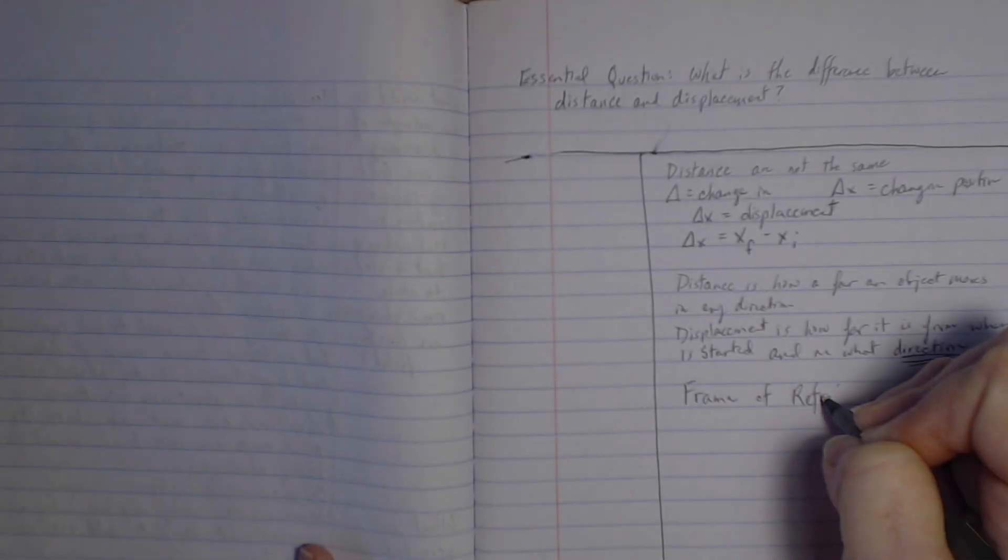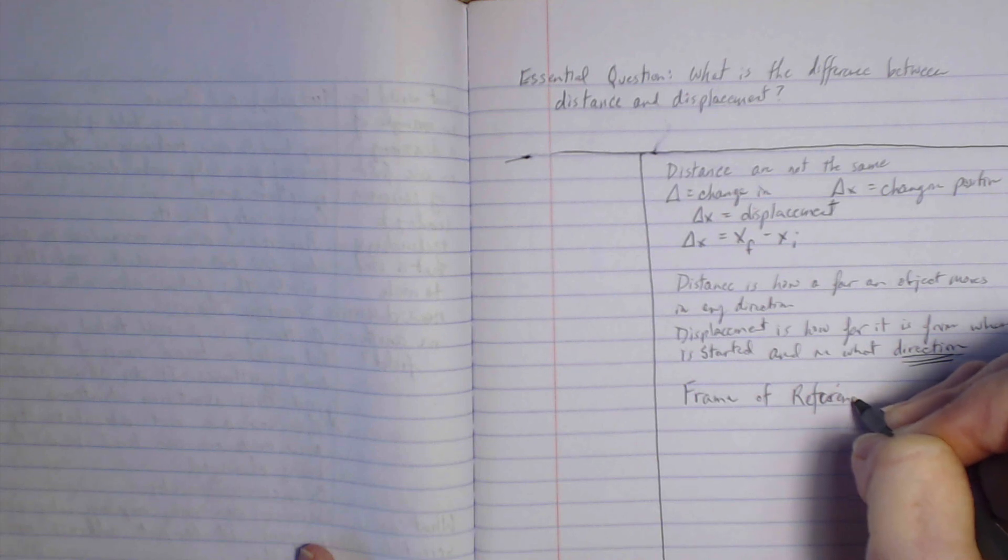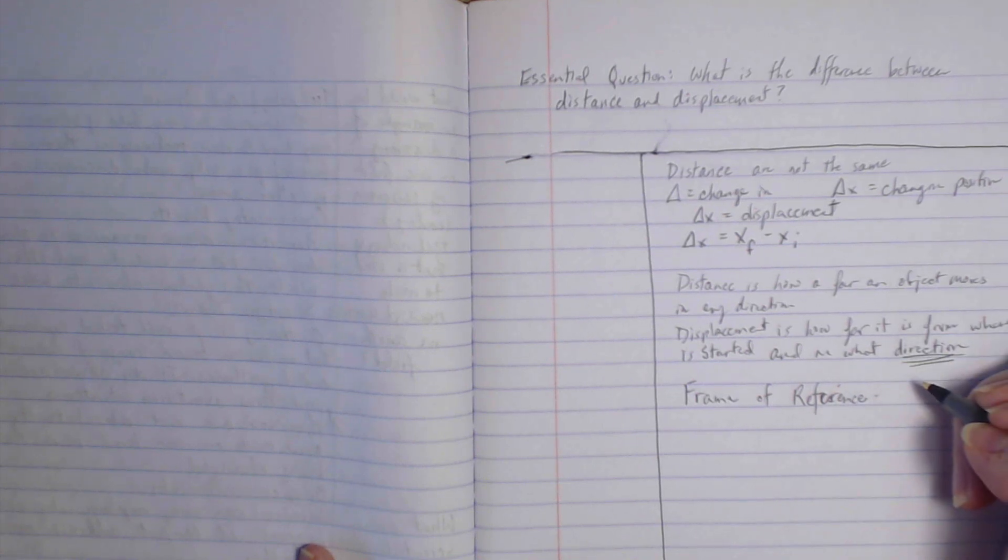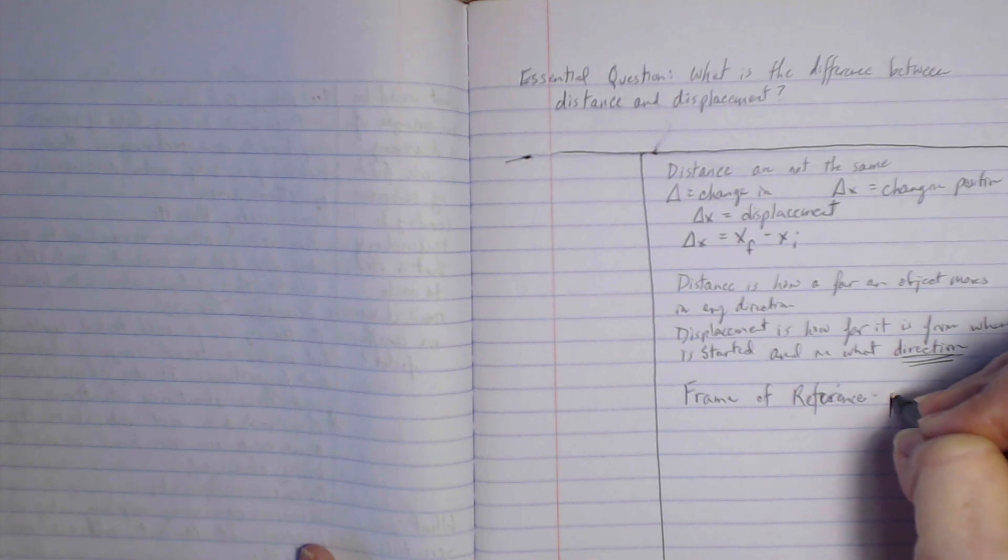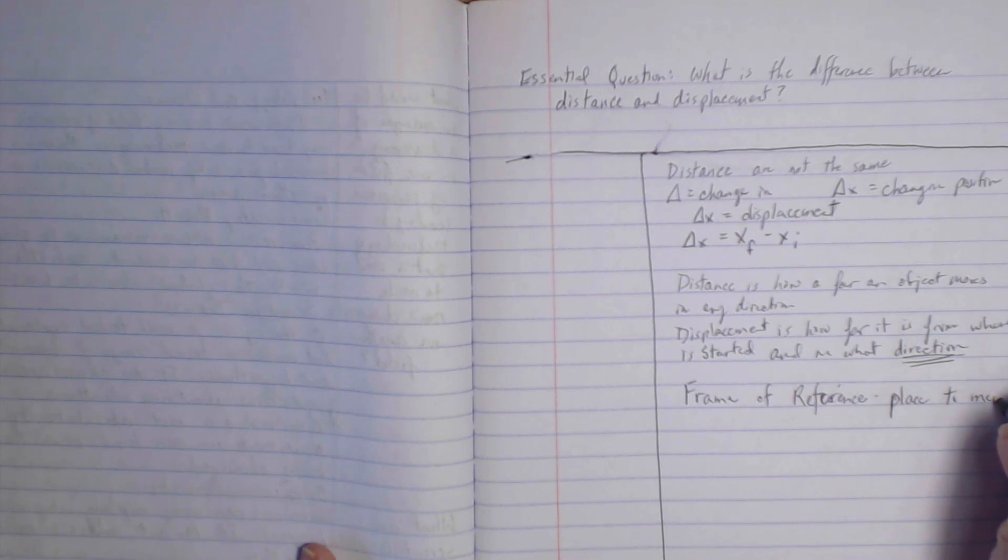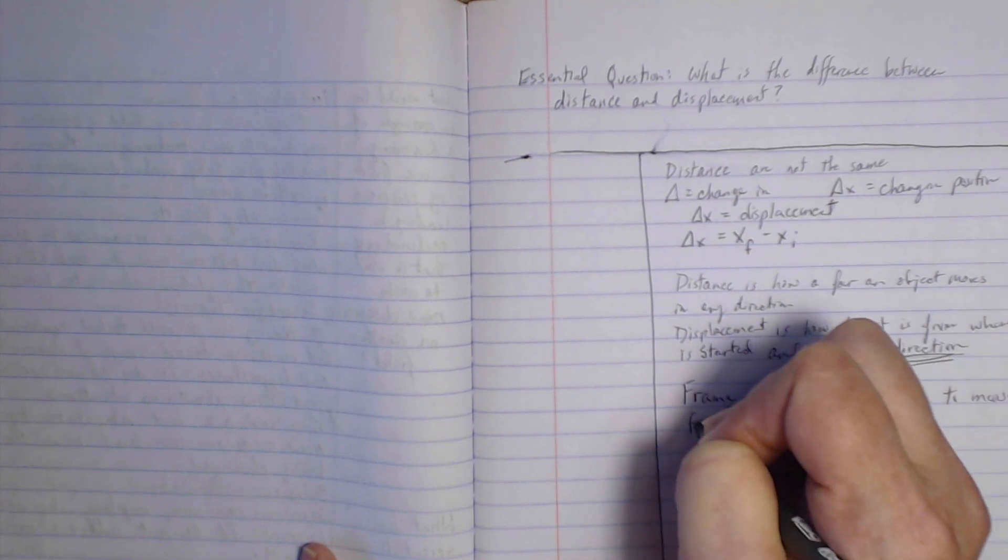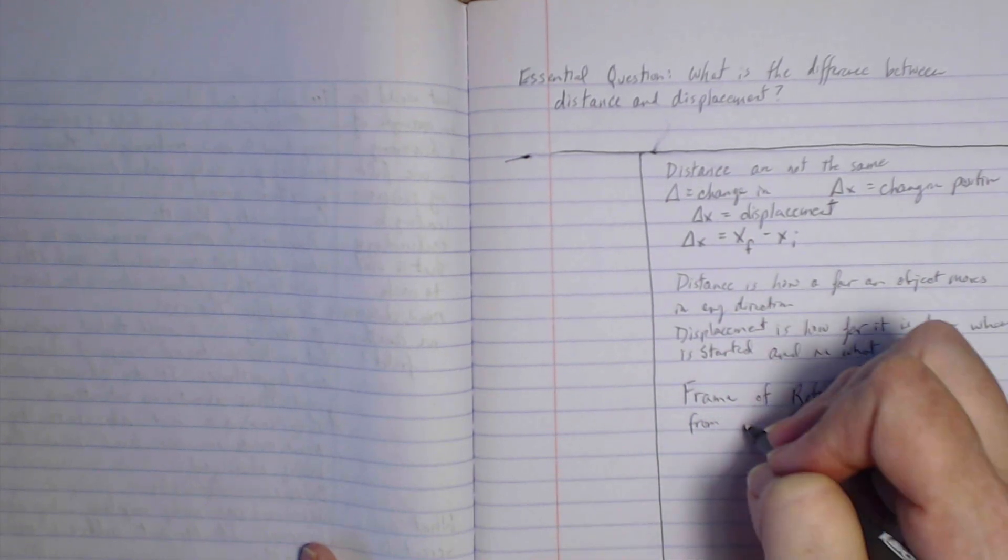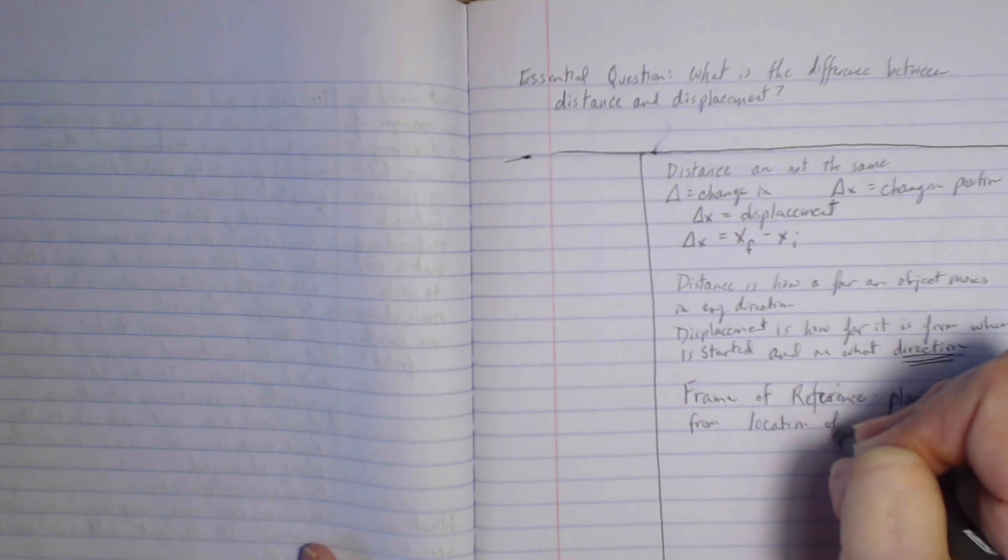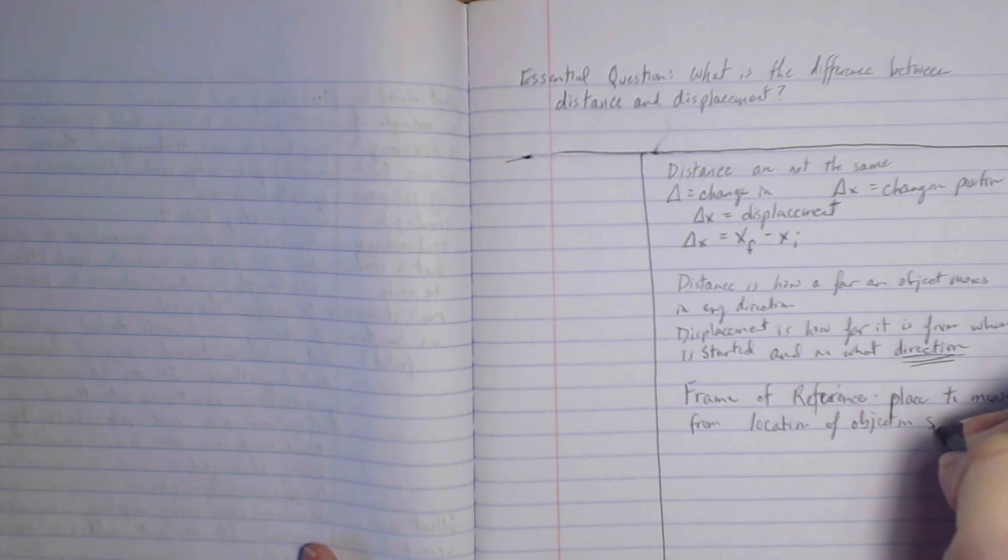One important point is that motion depends on a frame of reference. So I'm going to add that to my list of information as well. Note that I'm not making complete sentences. I'm just writing down the information that I know I need to know. A frame of reference is a place of reference to measure from. It's location of an object in space and time.